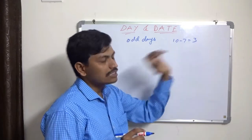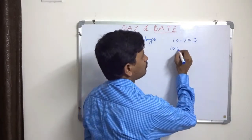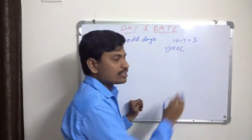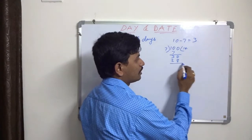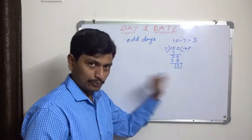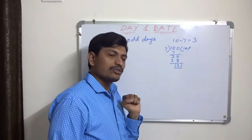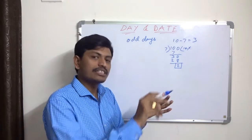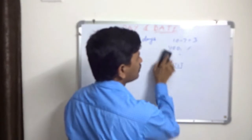In the same way, after 100 days what day will come? We divide by seven: 7 × 14 = 98, remainder is 2. So we count only two days. If today is Monday, after 100 days: Tuesday, Wednesday — Wednesday will fall. Out of 100, we divide by seven and take only the remainder.